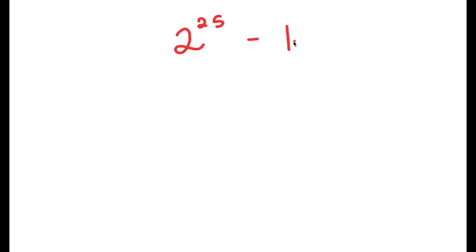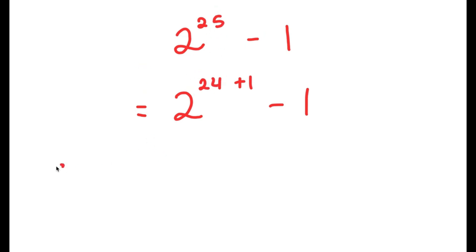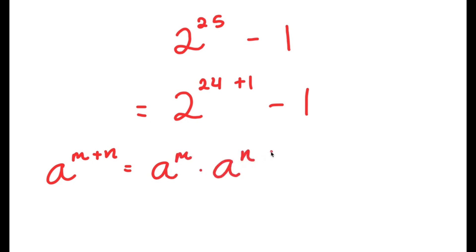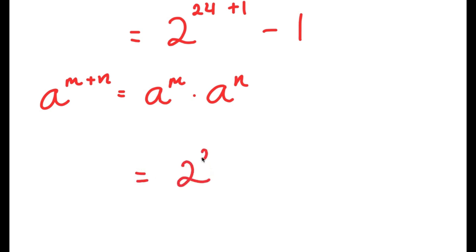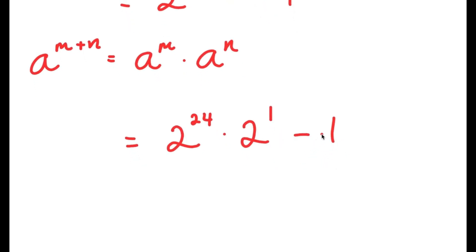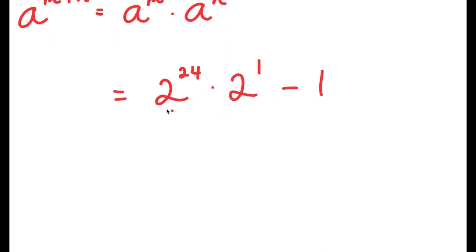In this problem, I'm going to solve 2 to the power of 25 minus 1. To start, I rewrite 2 to the power of 25 as 2 to the power of 24 plus 1, and then we have our minus 1 at the end. I'm rewriting 25 as 24 plus 1 so I can use the property a to the power of m plus n equals a to the power of m times a to the power of n. So 2 to the power of 24 plus 1 equals 2 to the power of 24 times 2 to the power of 1, minus 1.